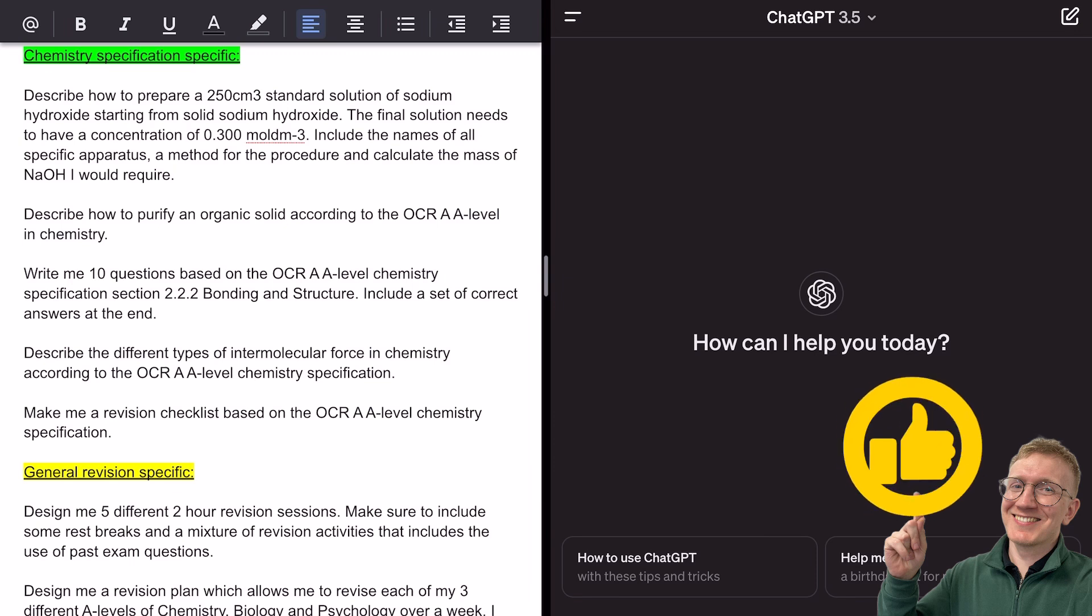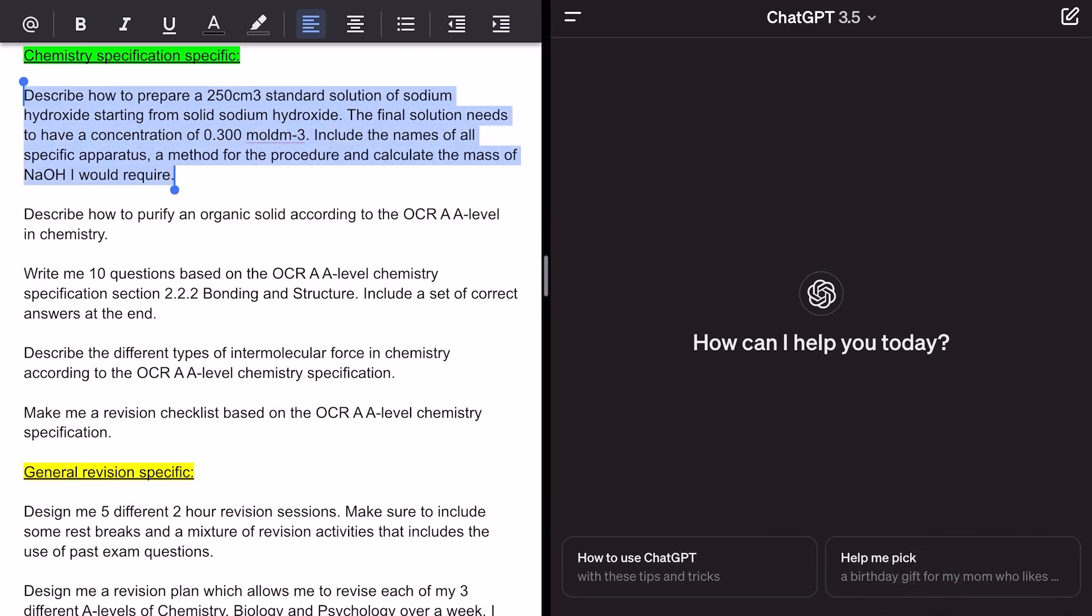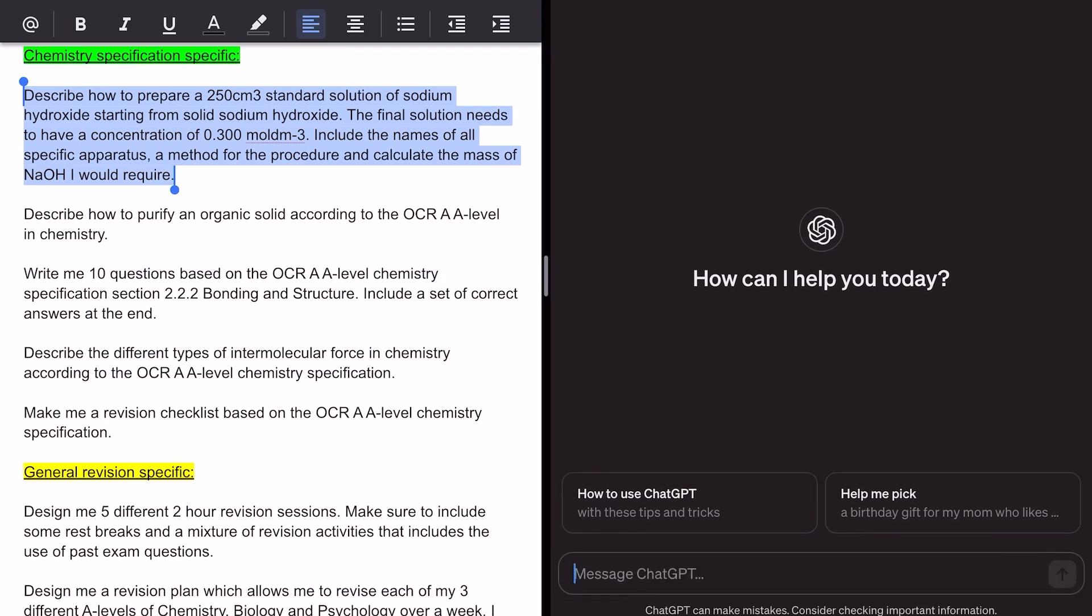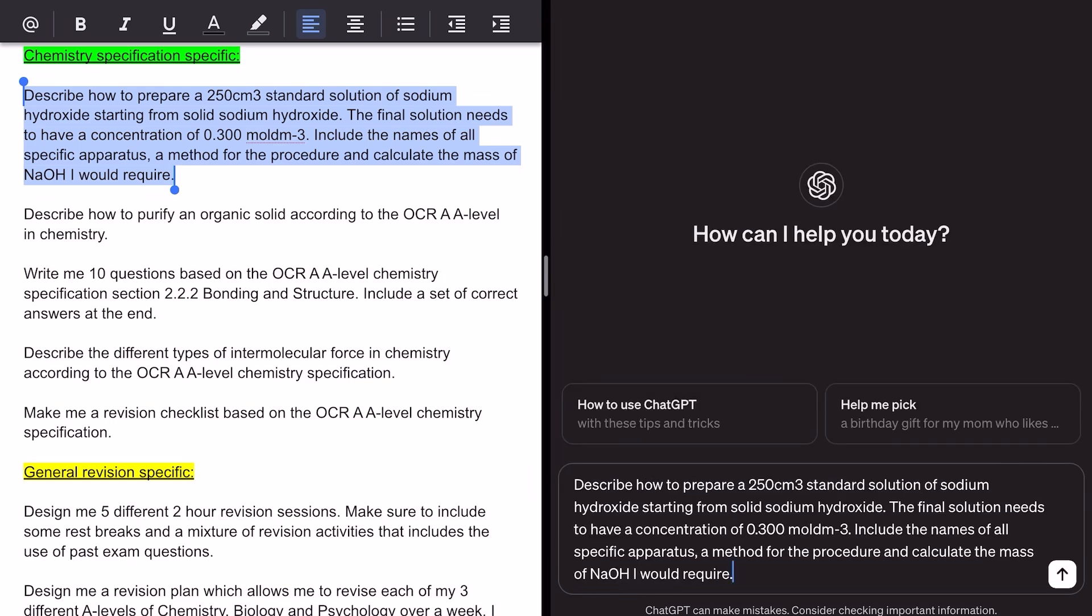For this first one, I'm going to ask it to describe a practical procedure. We often like to revise our practical procedures when we're getting ready for the summer exams, and we need to be able to summarize certain procedures in order to make sure that we can put these in a level of response question, maybe in paper three. So preparing a standard solution is a pretty common one. Let's see how ChatGPT compares. I've asked it to include the names of apparatus, a method for the procedure, and I've actually asked it to calculate the mass of sodium hydroxide that I would need to prepare a 0.3 molar per decimeter cubed solution with a volume of 250 centimeters cubed.